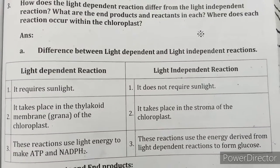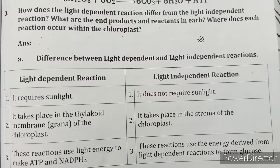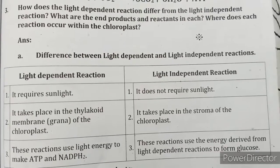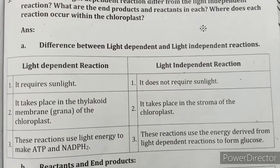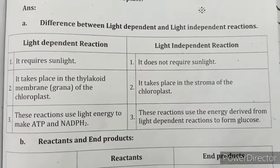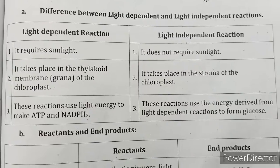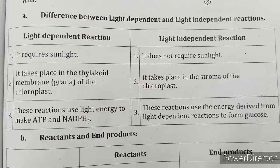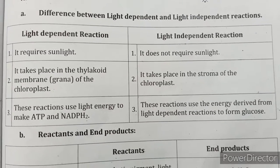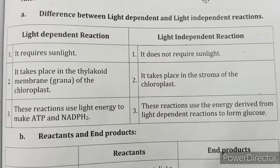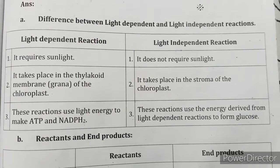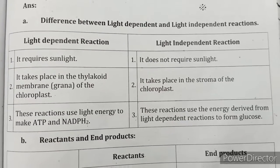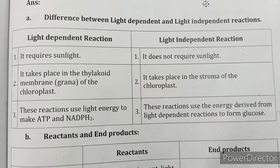How does the light-dependent reaction differ from the light-independent reaction? The light-dependent reaction requires sunlight and takes place in the thylakoid membrane of the chloroplast; it uses light energy to make ATP and NADPH2. The light-independent reaction does not require sunlight, takes place in the stroma of the chloroplast, and uses the energy derived from the light-dependent reaction to form glucose.